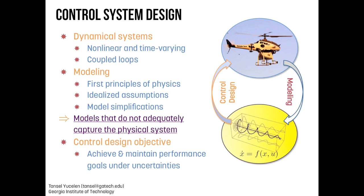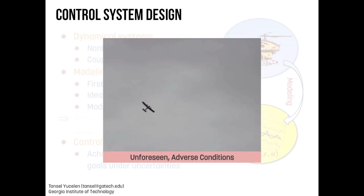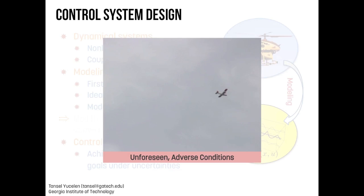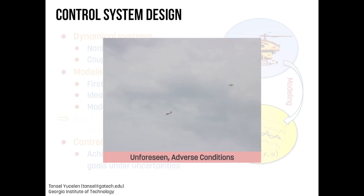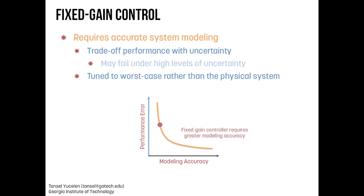Uncertainty is not only a result of the modeling phase. For example, let's consider this video — an aircraft is flying well, but in the middle of the flight, 50% of the right wing is off. We need to design a controller that can handle such unforeseen adverse conditions. This video is again from our research facility at Georgia Tech.